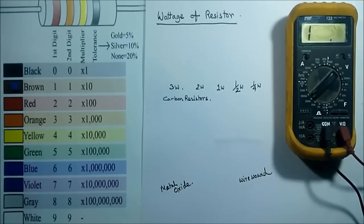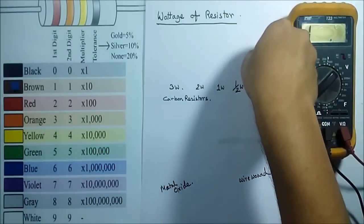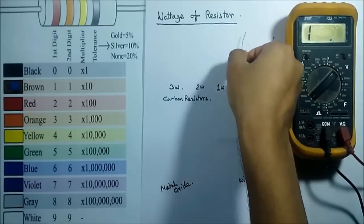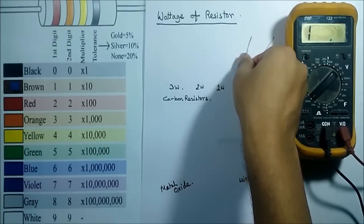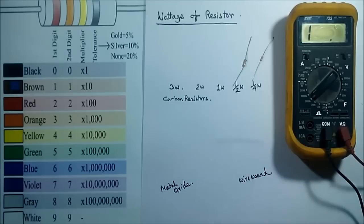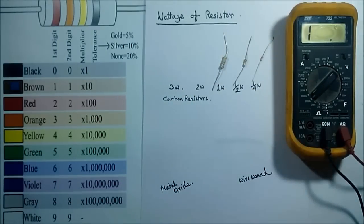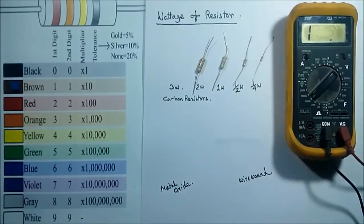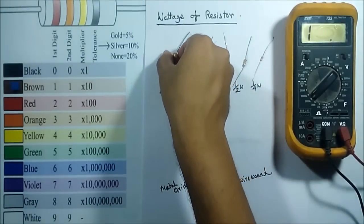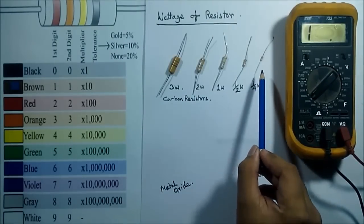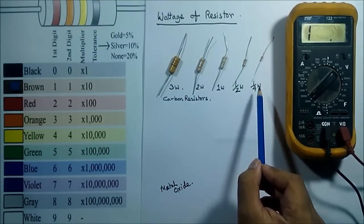For 1/4 watt, the resistor will look like this. For half watt it will look like this — slightly increased in size. For 1 watt the size is larger still, for 2 watt this is the size, and this is for 3 watt.